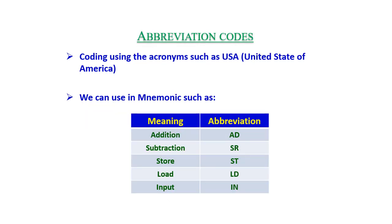Abbreviation code uses acronyms and mnemonics. For example, USA stands for United States of America. Other examples: Addition = AD, Subtraction = SR, Store = ST, Load = LD, Input = IN.